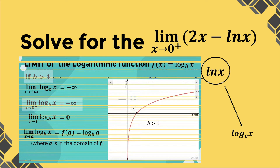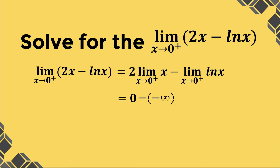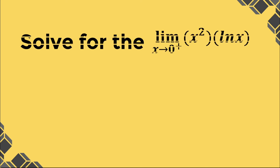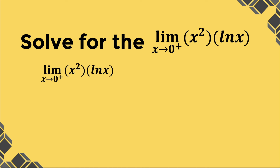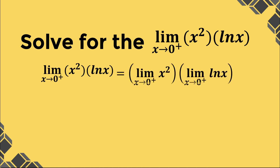Simplifying further, we have 0 minus negative infinity, which is equivalent to the limit of the function: positive infinity. Let's solve for the limit of x squared times ln of x as x approaches 0 from the right. We can separate the terms using limit laws. Evaluating the terms, we have 0 times negative infinity, which is equivalent to 0. Therefore, the limit of x squared times ln of x as x approaches 0 from the right is 0.